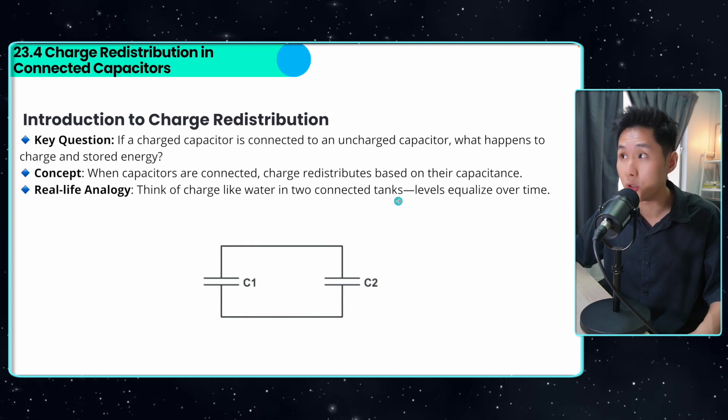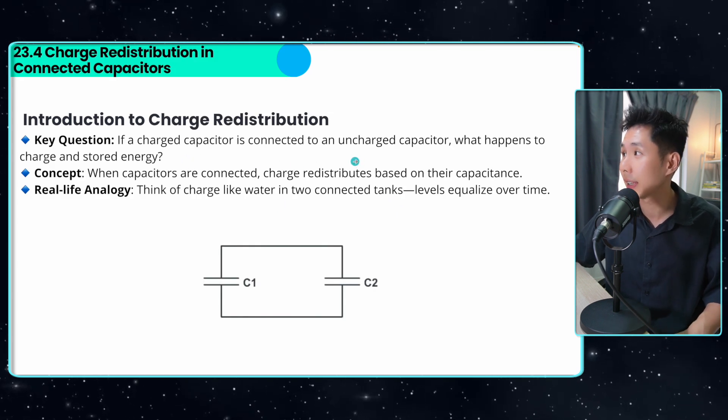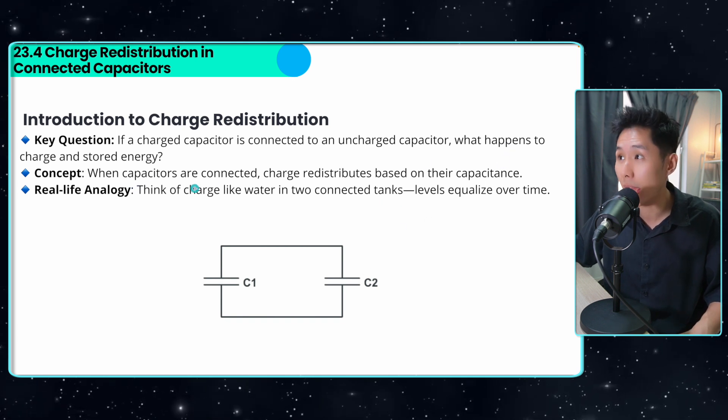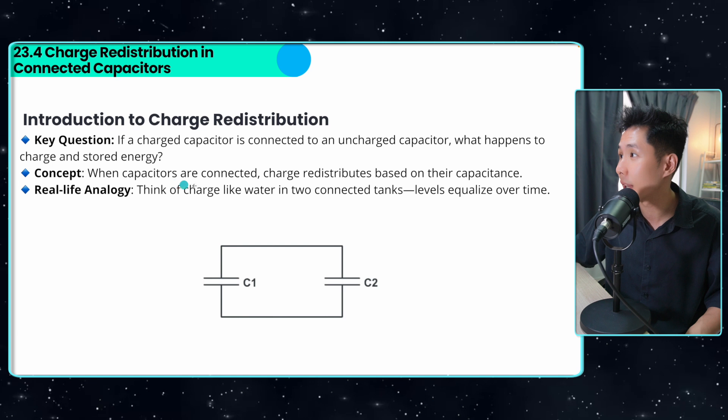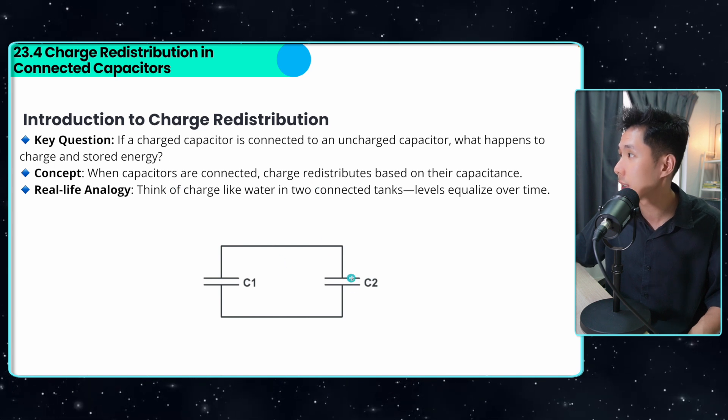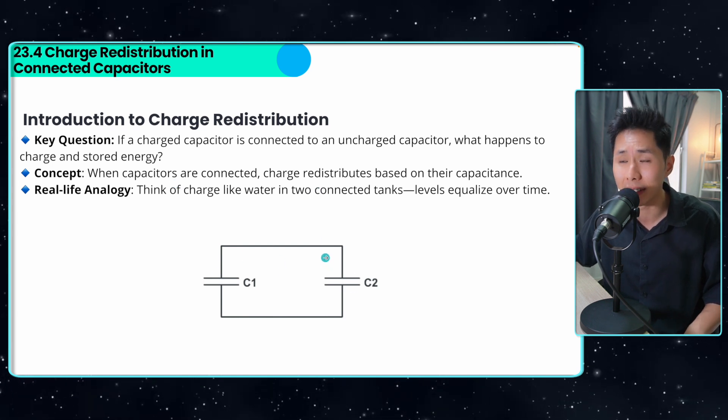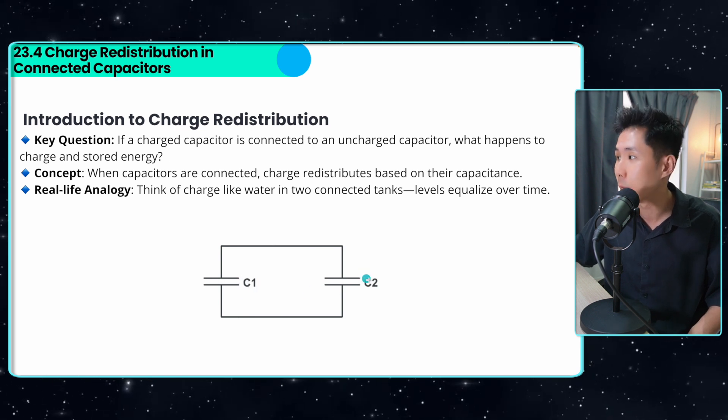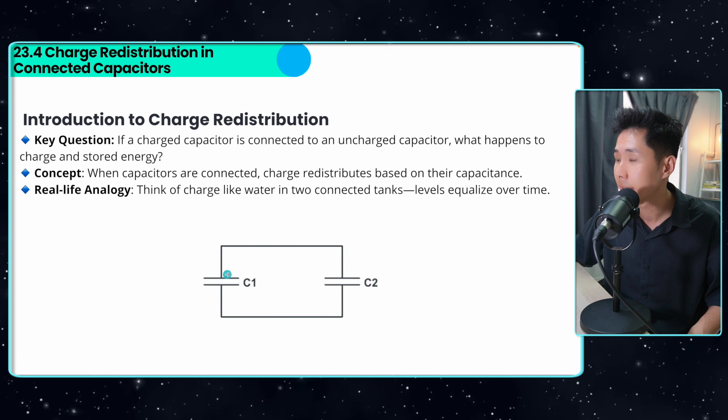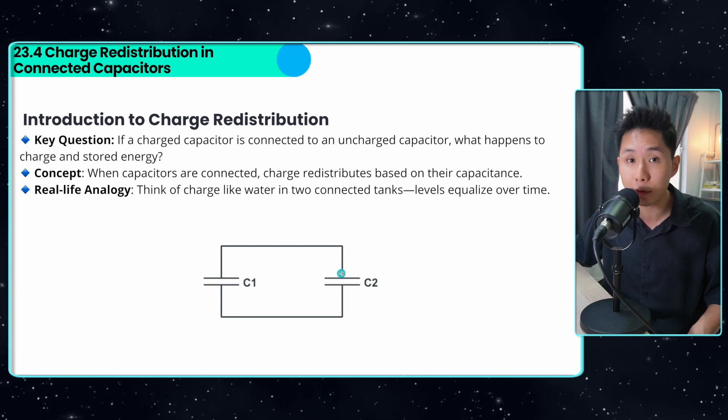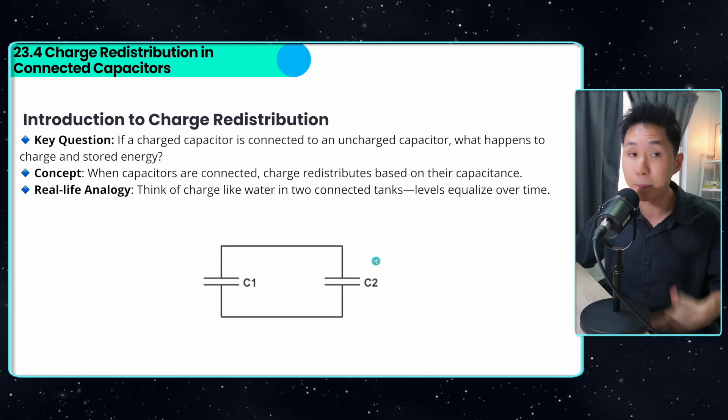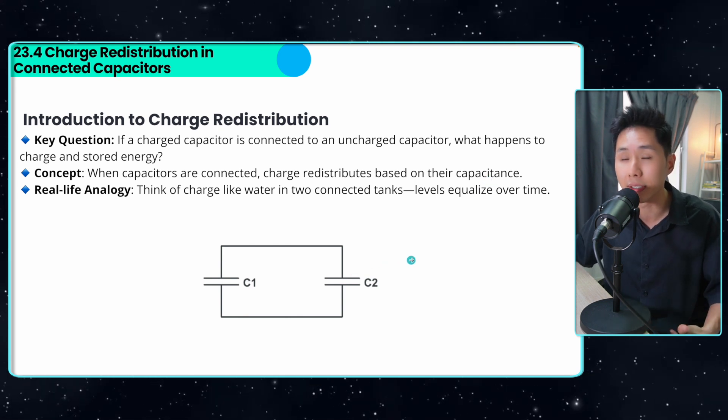Now moving on to charge redistribution. If a charged capacitor is connected to an uncharged capacitor, what happens to the charge and stored energy? So the concept is that when capacitors are connected, charges redistribute based on their capacitance. So it means that if C1 is charged and C2 is not, and when you connect them together, some of the charges will be redistributed to C2. And the amount which is distributed depends on the capacitance of each capacitor.